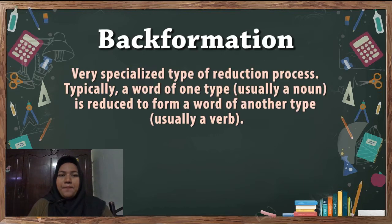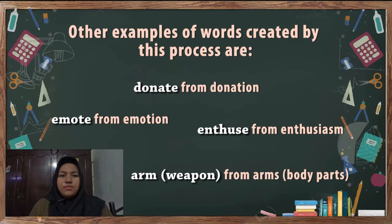Sixth, back formation. Back formation is a very specialized type of word formation process. Typically, a word of one type, usually a noun, is reduced to form a word of another type, usually a verb. Other examples of words created by this process are donate from donation, emote from emotion, enthuse from enthusiasm, and arm meaning to weapon from arms.